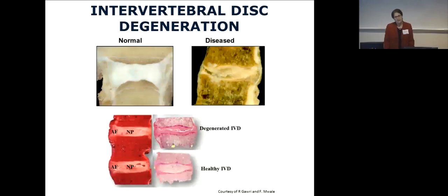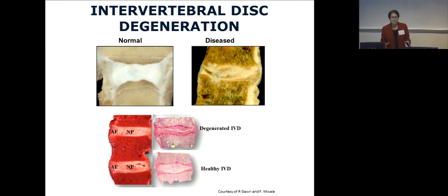Unfortunately, it's very prone to undergo degeneration, which often occurs focally and most commonly in the central nucleus pulposus tissue, characterized by a loss of extracellular matrix. Since this is a weight-bearing tissue, once you change the composition of the nucleus pulposus, you're going to alter the distribution of forces across the disc, and that promotes further degeneration.